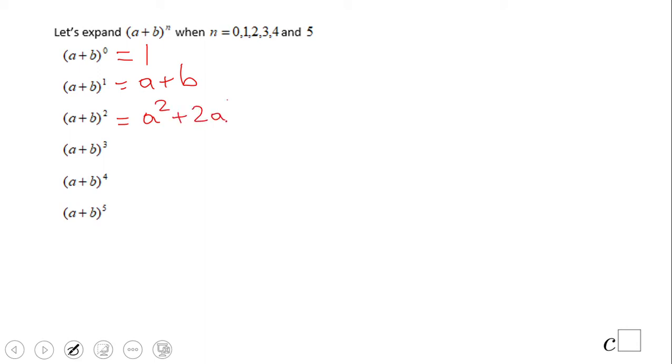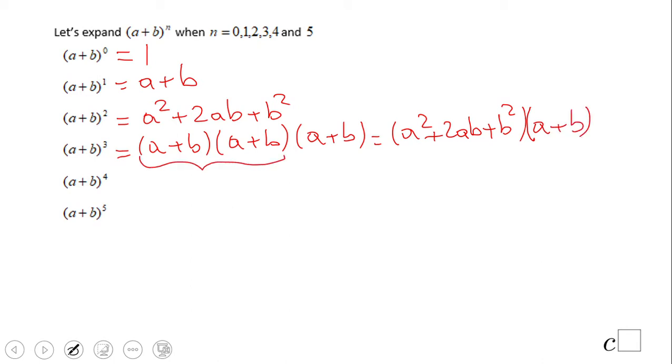What about this one? This will be (a+b) times (a+b) times (a+b), which, if we look to the previous one, would be (a² + 2ab + b²) times (a+b). So we multiply these two guys.